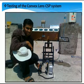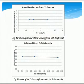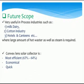This is the test setup for testing of this convex lens solar system. And results that I have found are very interesting. The collector efficiency is nearly the same irrespective of wind speed, mass flow rate and solar intensity. And also, the overall heat losses are nearly the same irrespective of flow rate and wind speed. Therefore, these convex lens solar collectors found their application in process industry, where large amount of hot water as well as steam is required. Thus, these solar collectors with maximum efficiency of 64% are economical and also quick for generation of steam.